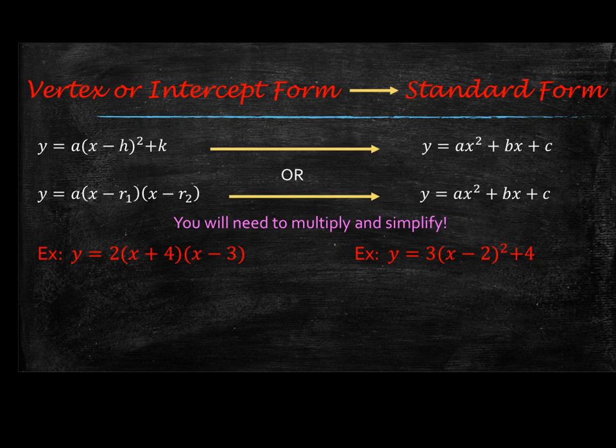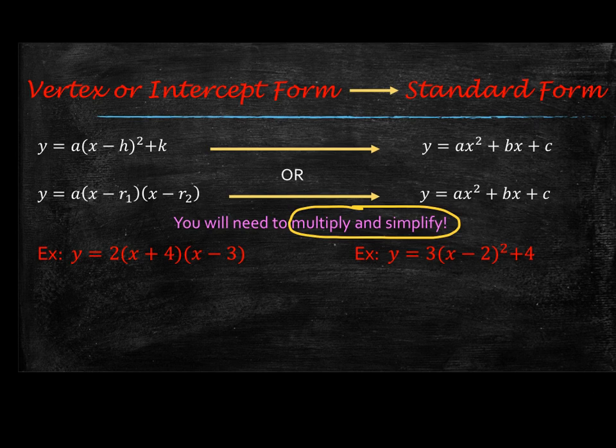Our last type is if you're going from vertex or intercept form, and you're going to convert that into standard form. And so for both of these types, you will just need to multiply and simplify it into standard form. So let's look at this first one, so y equals 2 times x plus 4 times x minus 3. This is in intercept form, so we're going to go ahead and multiply.